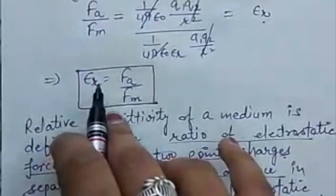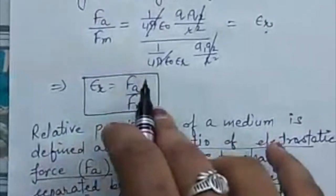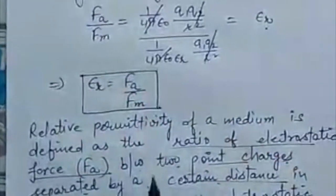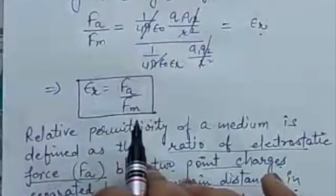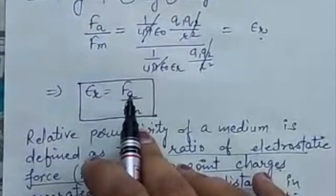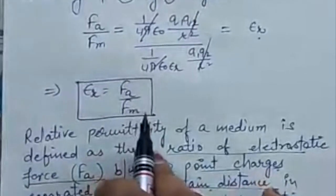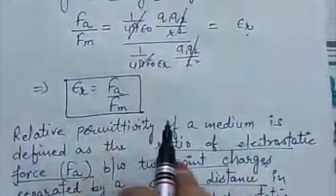So epsilon r, that is known as relative permittivity, is equal to Fa upon Fm. So it is defined as the ratio of these two forces in different medias: Fa, the force in air, divided by force in the medium.